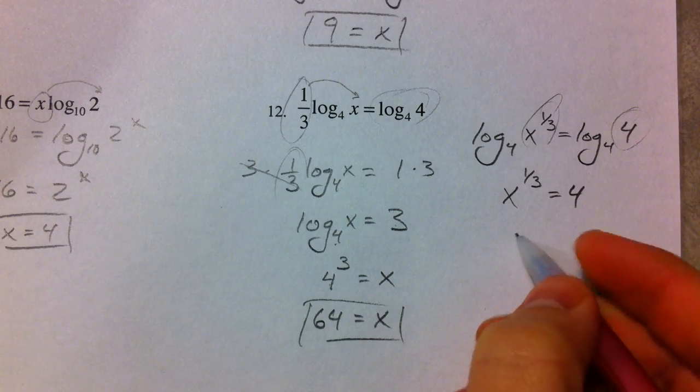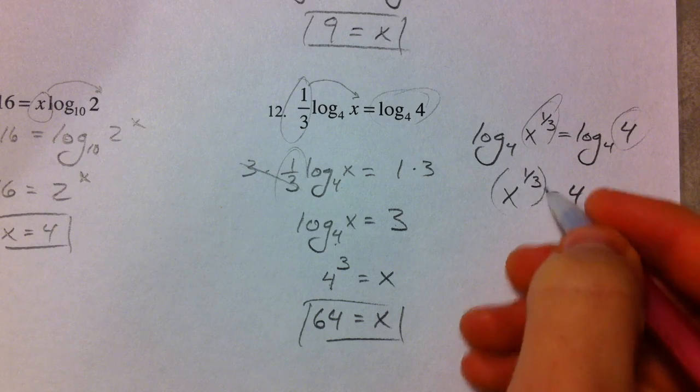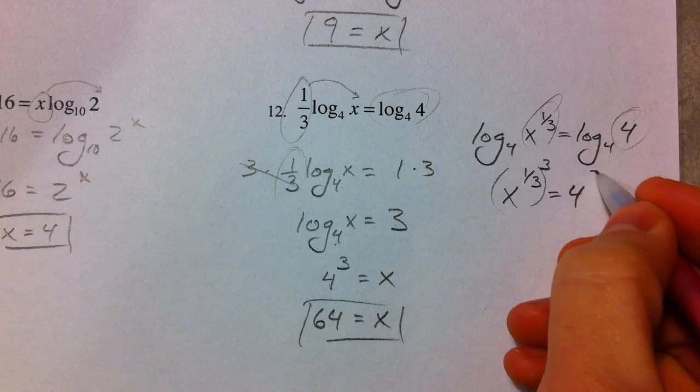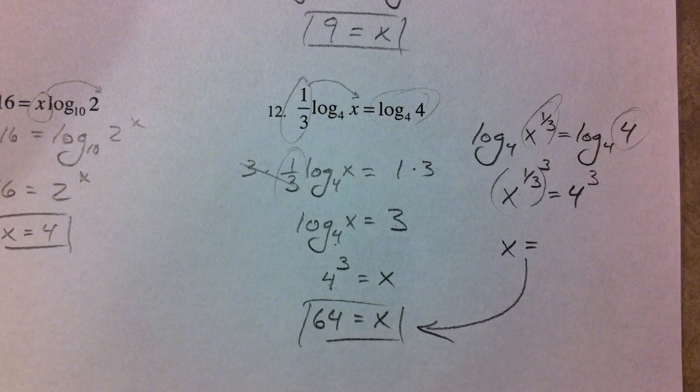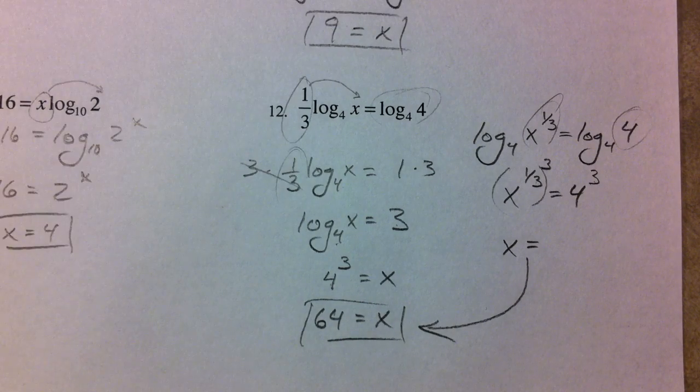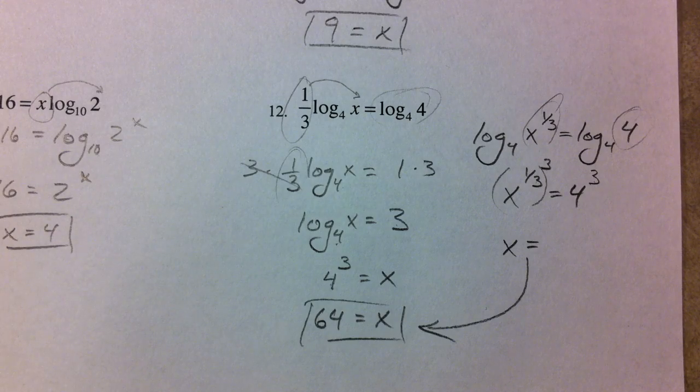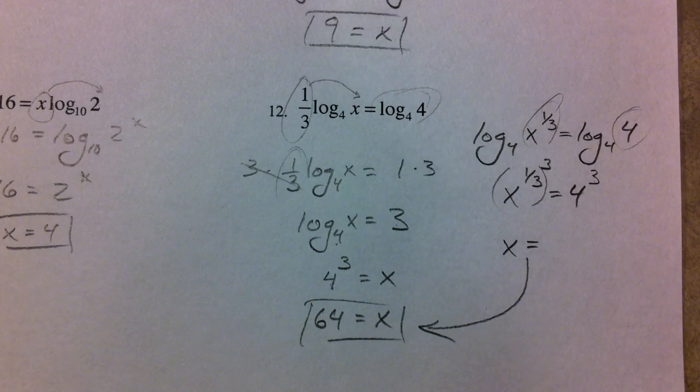So if we cube both sides now, because we're undoing the 1/3 power, we get x equals 4 cubed equals 64. And there we have some properties of logs put into good use.